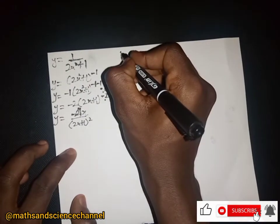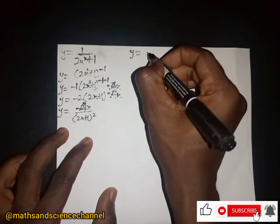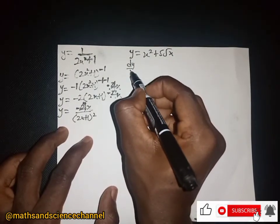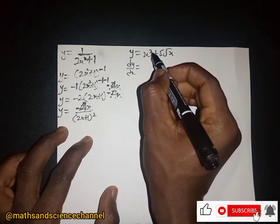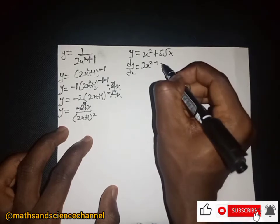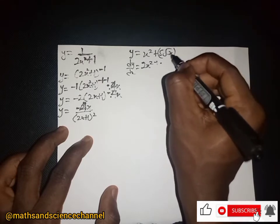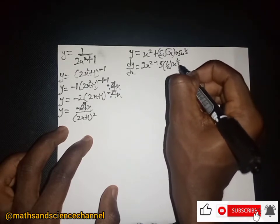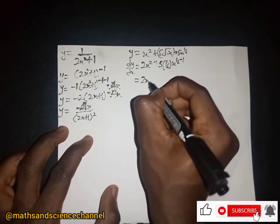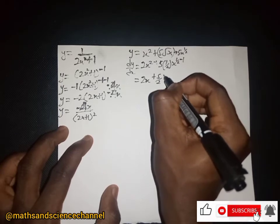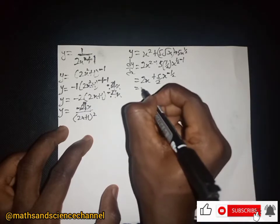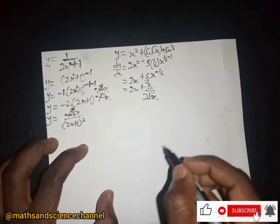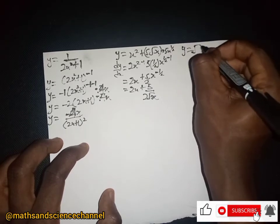Another example: y equal to x squared plus the square root of 5x. The dy/dx will be — 2x, and for root 5x, we treat 5x to the power 1/2, drop the 1/2, subtract 1 — giving 2x plus 5 over 2 times x to the power negative 1/2, which simplifies to 2x plus 5 divided by 2 root x.